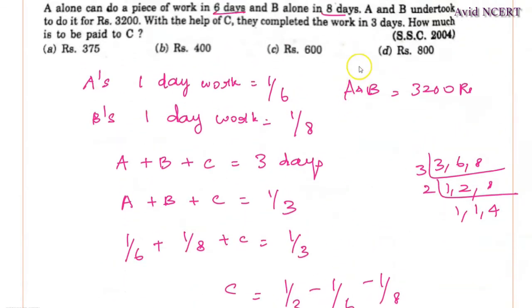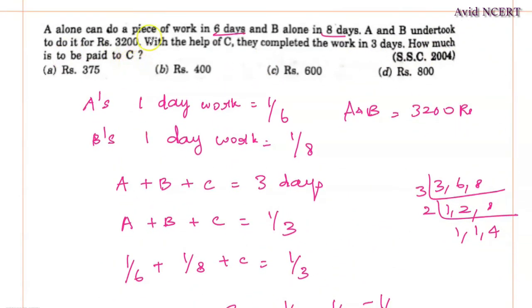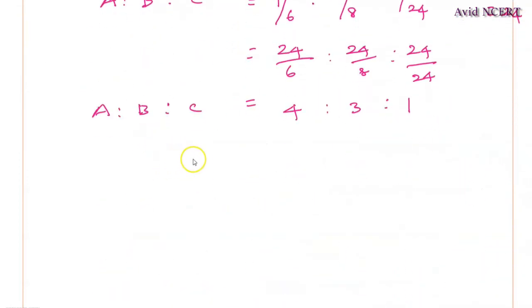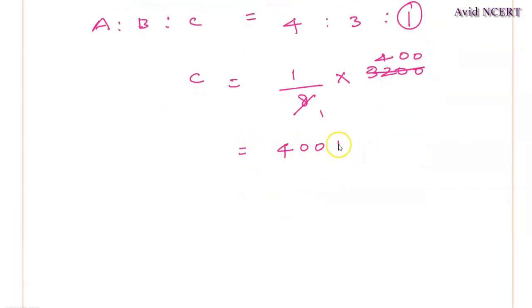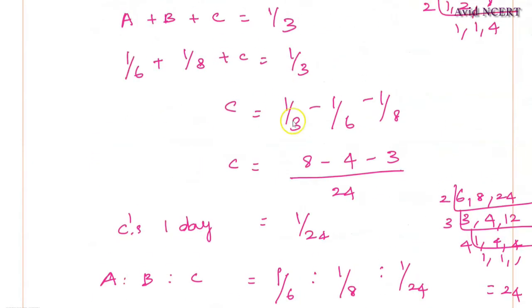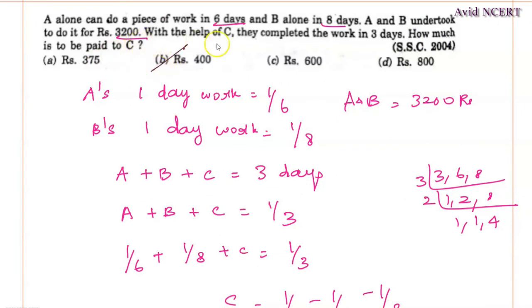So now they are asking for how much is to be paid to C. So we have to find the share of C in this 3,200. So C share will be equals this 1 divided by 4 plus 3 plus 1. That is the total parts is 8. 4 plus 3 plus 1 is 8 into 3,200. So simplify this 8, 1 times, 8, 4 times is 3,200. 400 into 1 is 400. So which is 400 rupees. That is C share is equals 400 rupees. Amount to be paid to C is 400 rupees.